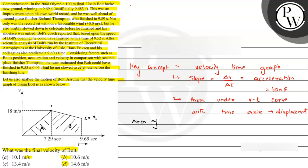Area of triangle A will be equals to half into base, which is 7.29, into height which is 18. So if we divide 9 into 7.29, it comes out to be 65.61 meters. Because area of triangle is giving us displacement.